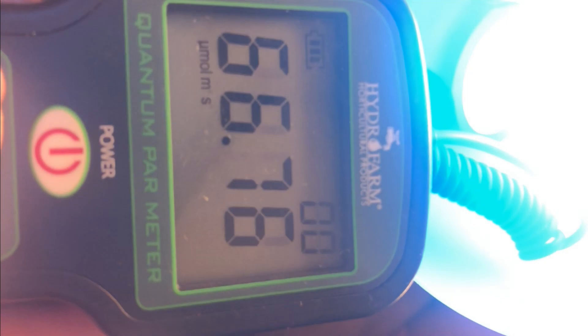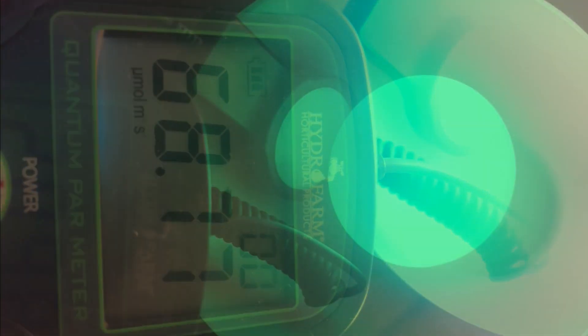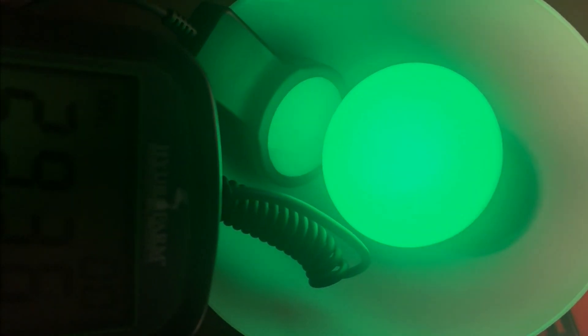As you can see here, I have a PAR meter that measures the amount of usable light a plant will receive. When switching between a 10 watt blue LED bulb and a 10 watt green LED bulb, you can see that the green light registers significantly less on the PAR meter even though it's just as intense as the blue.